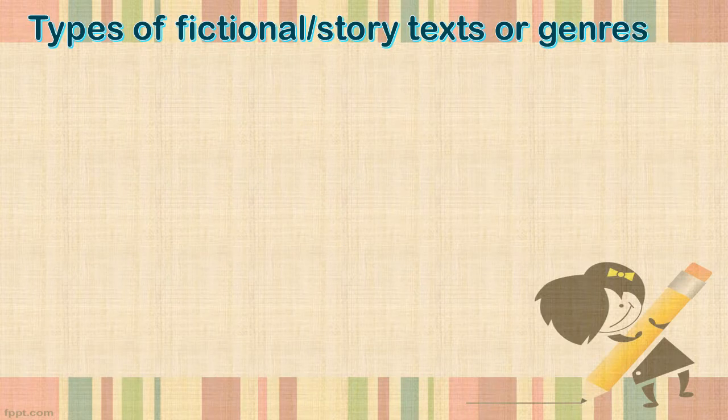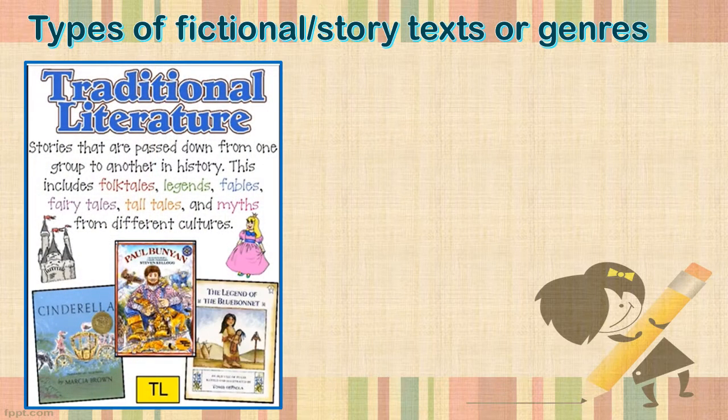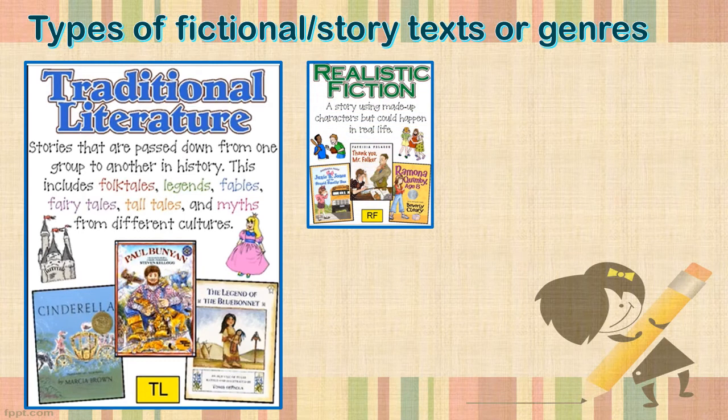Let's quickly review the types of fictional or story texts that we get. Of course, the most common one — the one we know the best — is your traditional literature. That includes folk tales, fairy tales, legends, fables, and myths. Then we have realistic fiction, which is made-up characters but with situations that can happen in real life, like the way your life is every day.